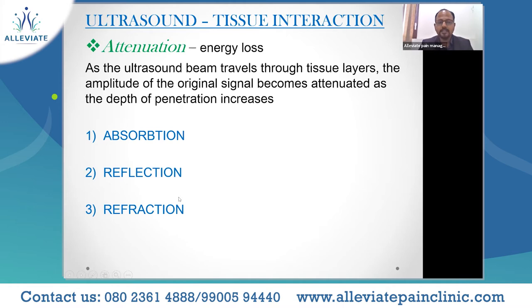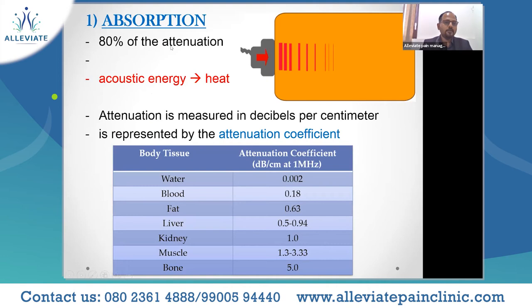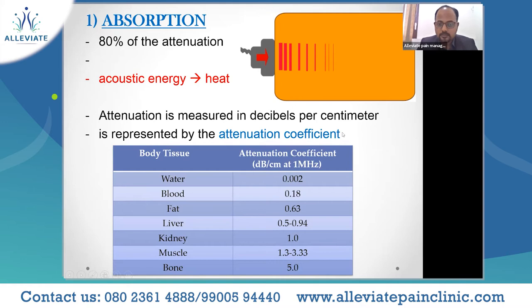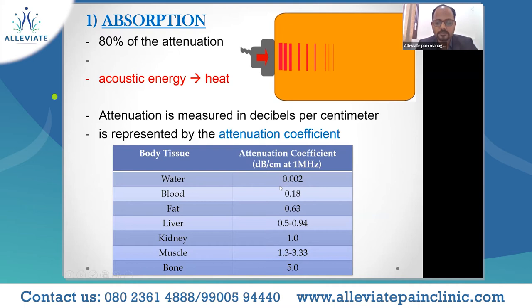More than 80% of attenuation is because of absorption. The ultrasound waves get sequentially absorbed by the tissues. This leads us to the attenuation coefficient — different tissues have different absorption capacities, measured as decibels per centimeter at one megahertz. Water has the lowest attenuation coefficient, and bone has the maximum attenuation coefficient. This is why in a water phantom at workshops, you are able to see structures very well — there is very little absorption of ultrasound waves in water.